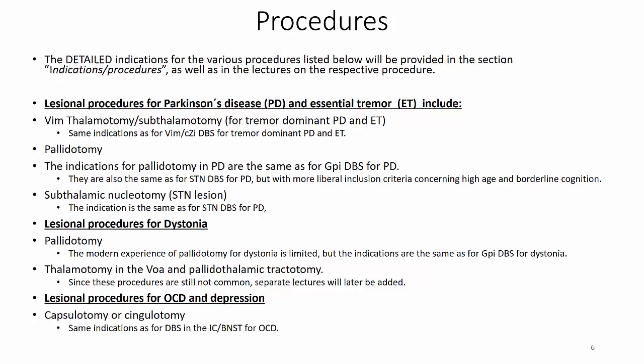The detailed indications for the various procedures listed below will be provided in the section Indications Procedures, as well as in the lectures on the respective procedures. Lesional procedures for Parkinson's Disease and Essential Tremor include VIM Thalamotomy or Subthalamotomy for tremor dominant Parkinson's and Essential Tremor — the same indication as for VIM or Caudal Zona Inserta DBS. Then Pallidotomy, with indications the same as for GPI DBS, and also the same for STN DBS for PD, but with more liberal inclusion criteria concerning high age and borderline cognition. Also, Subthalamic Nucleotomy — lesions of the STN — with indications the same as for STN DBS for PD.